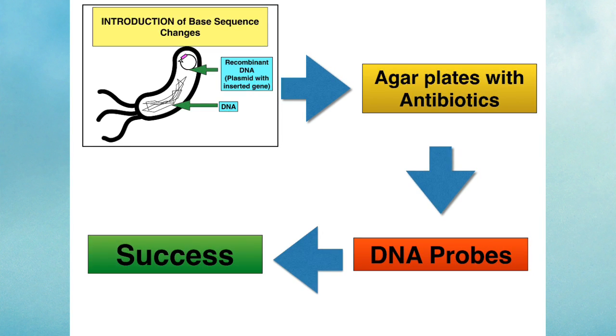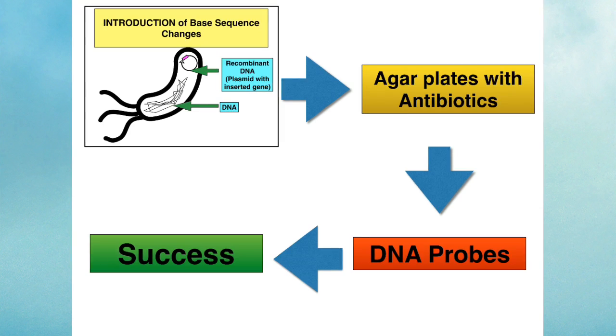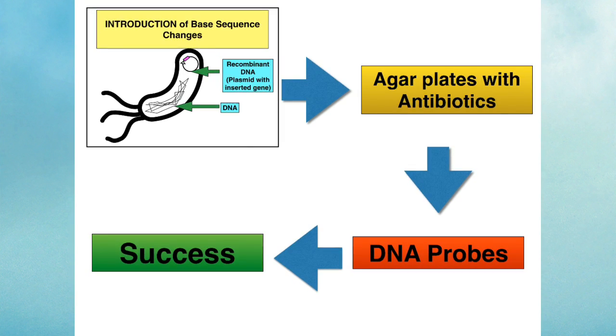DNA probes are usually used to identify those bacteria that contain the plasmid with the inserted gene, the recombinant DNA.